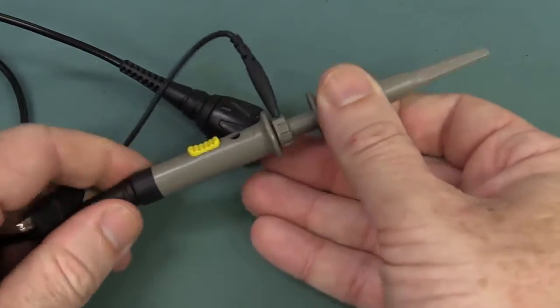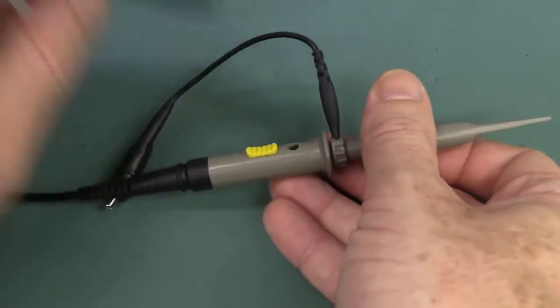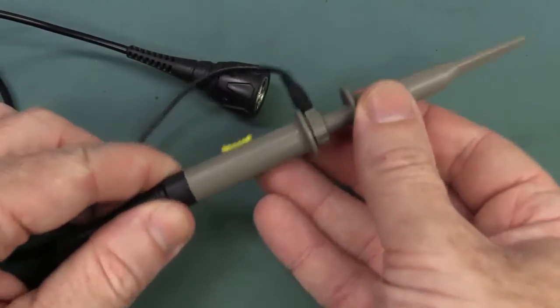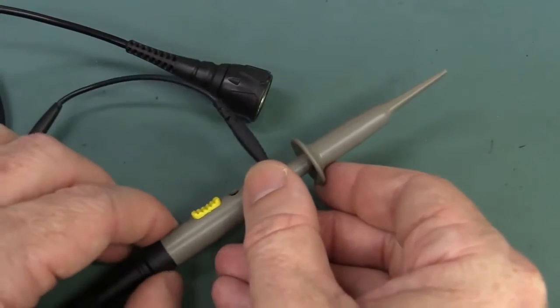And you get these RP2200 switchable times one times 10 passive probes with it, 150 megahertz bandwidth, which is pretty good. They're reasonable quality, I'm not going to write home about them, but you do get four of them. Awesome! Did I mention it's a four channel scope for $399?